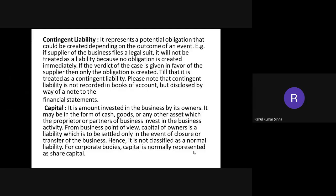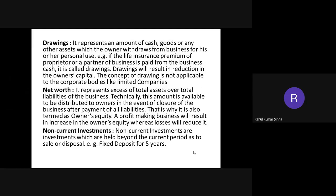Contingent liabilities are not a liability yet, but on the happening of certain events they can become an obligation on the business. Capital means the contribution made by the owner. Drawings means when the owner withdraws capital for personal use. Net worth is the excess of assets over liabilities. Non-current means more than a year; current means up to a year. Debtor is the person to whom credit sale is made; creditor is the person from whom credit purchase is made.